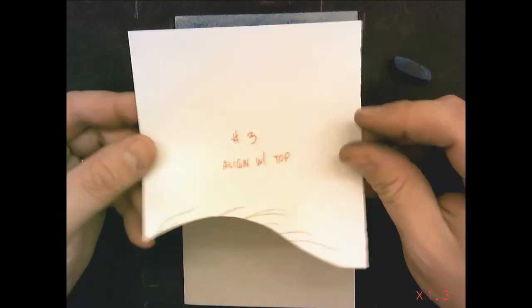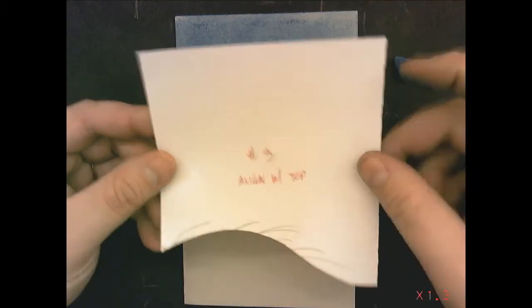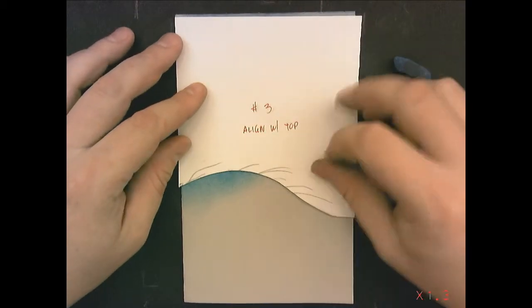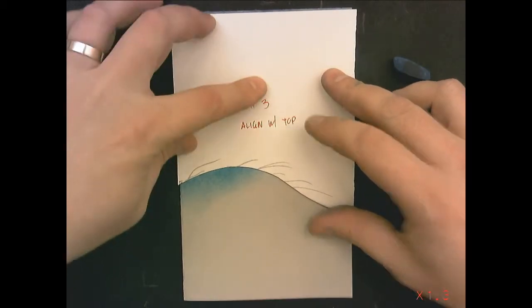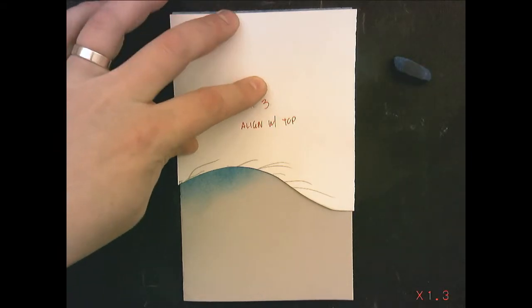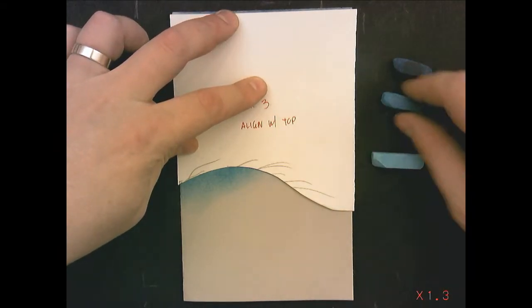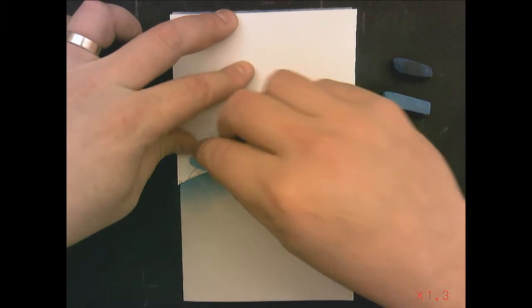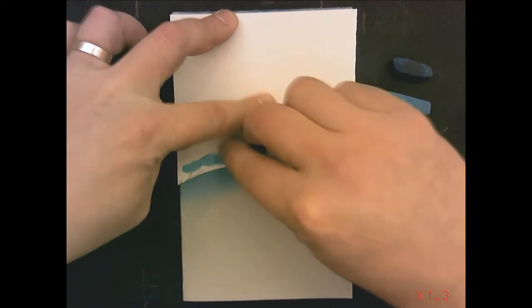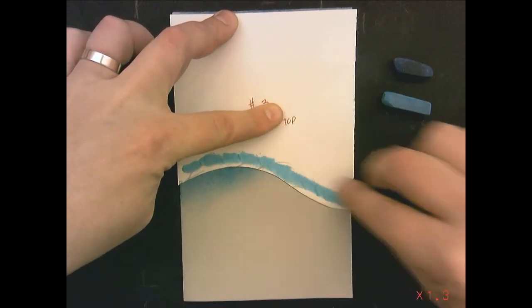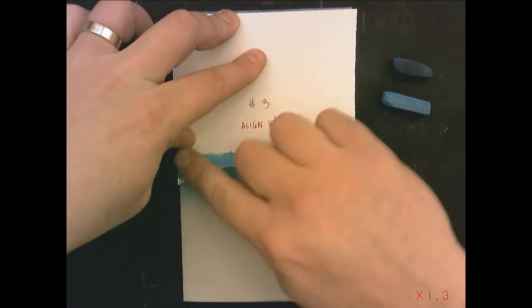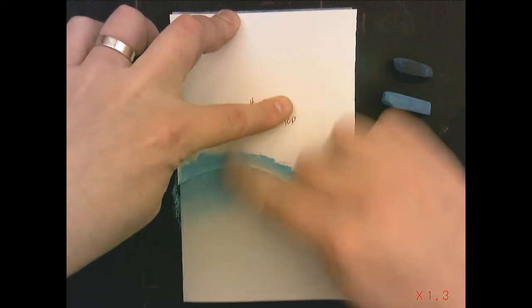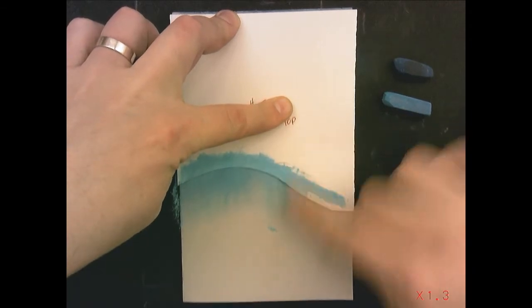Stencil number three. We're going to align stencil number three with the top of the card. And this time I'm going to use a lighter blue. So you can see it's a little bit lighter. Again, I'm going to apply it pretty thick, pretty liberally onto the stencil. I want to make sure there's enough chalk powder there. And I'm going to blend it down.